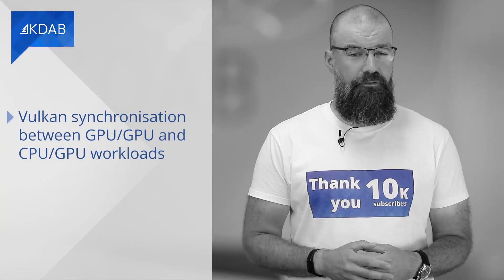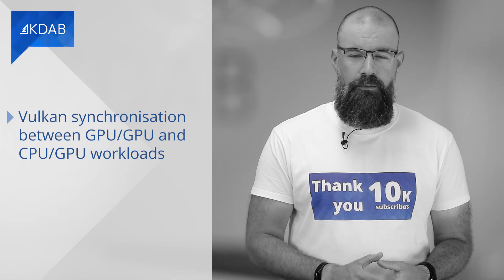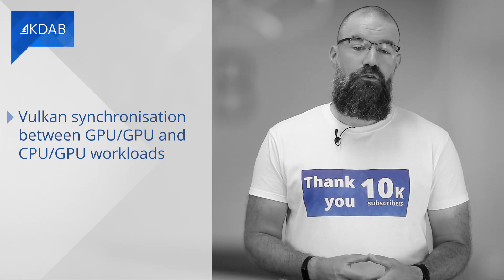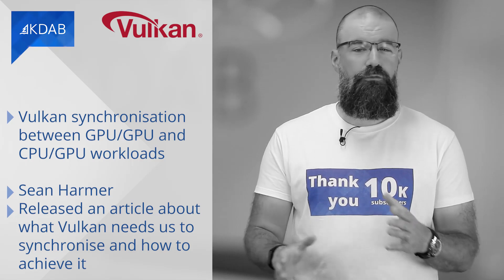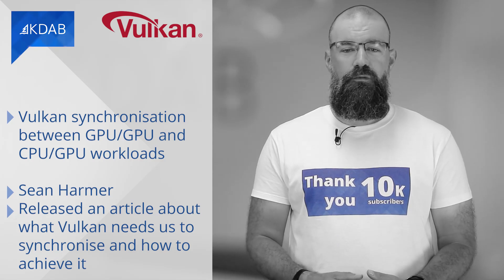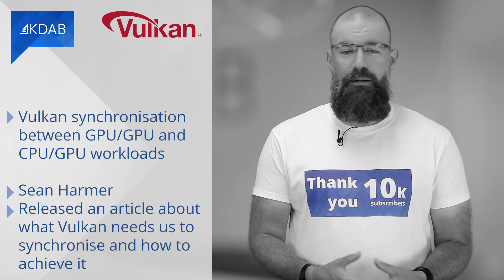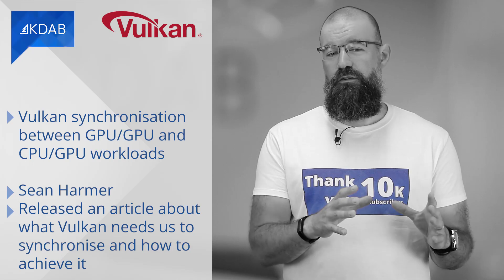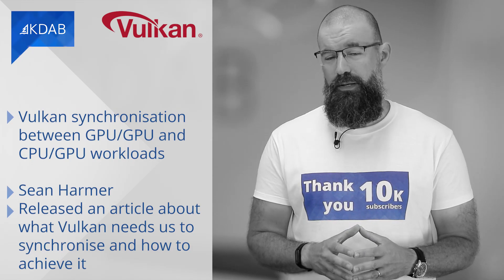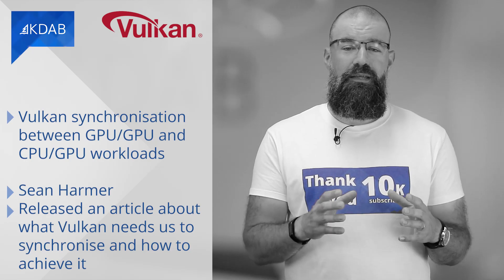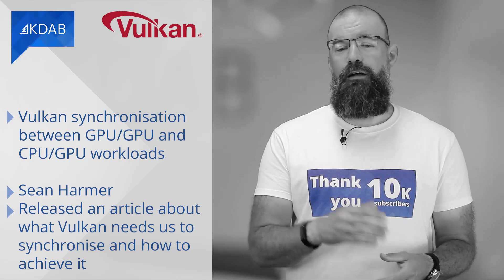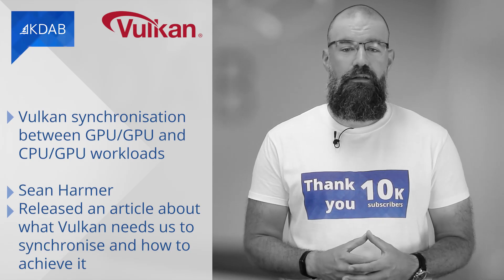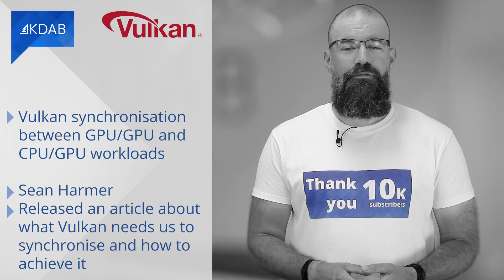This topic might be very specific, but when you are working with Vulkan, the synchronization between GPU-to-GPU and CPU-to-GPU workloads is key. My colleague Sean Harmer has released an article about what Vulkan needs us to synchronize and how to achieve it. He talks about two high-level parts of the synchronization domain: GPU-to-GPU synchronization to ensure that certain GPU operations do not occur out of order, and CPU-to-GPU synchronization to ensure that we maintain a certain level of latency and resource usage in our applications. You can read more by following the link below.